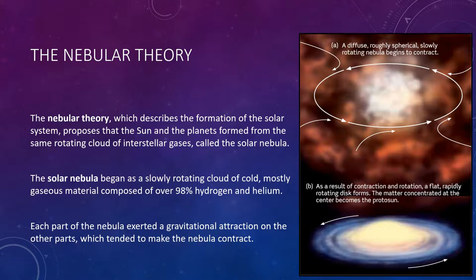Because gravity pulls inward in all directions, you might at first guess that the solar nebula would have remained spherical as it shrank. Indeed, this idea that gravity pulls in all directions explains why the sun and the planets are spherical. However, we must also consider other physical laws to understand how orderly motions arose in our solar nebula.